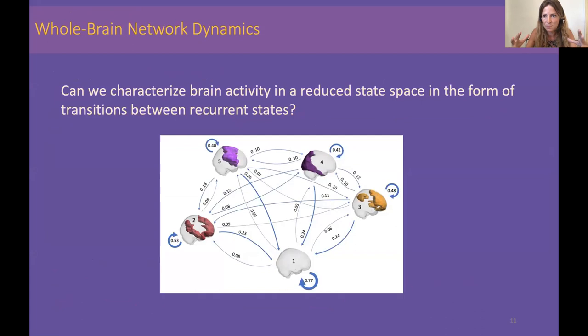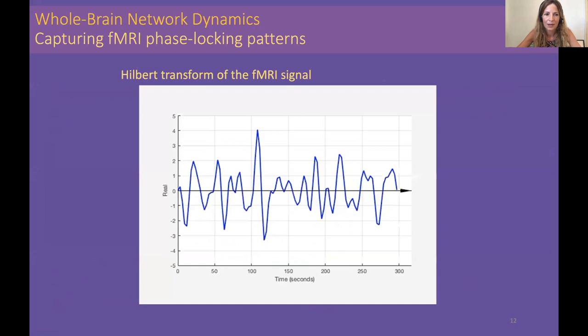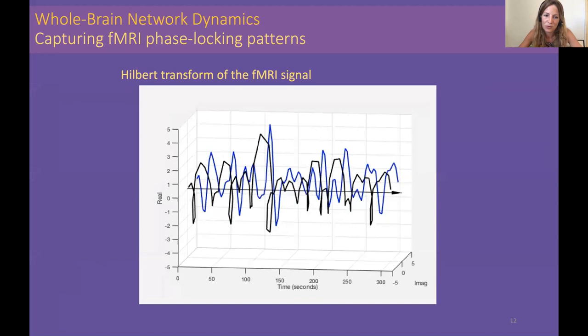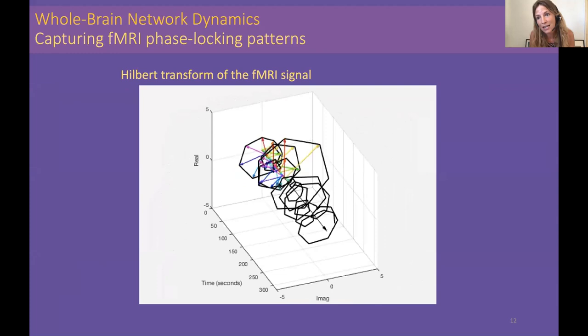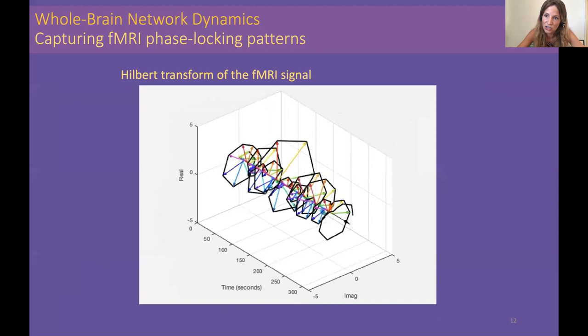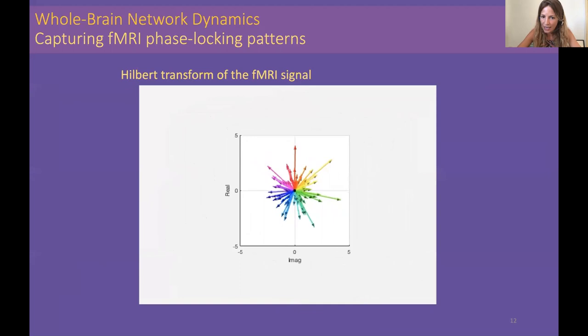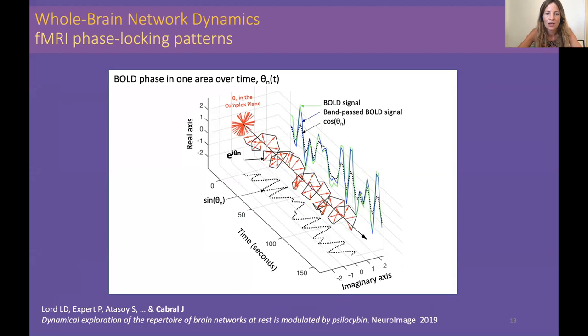The idea is whether we can characterize brain activity in a reduced state space, in the form of transitions between recurrent states. One of the key things we do is, when we have the fMRI signal — a real signal — we cannot directly analyze phase dynamics. To analyze the phase, we use the Hilbert transform. Imagine the signal in the real domain with the imaginary axis; the signal is seen like an oscillation which has an instantaneous phase at each instant of time. If we take the signal in each brain area and compute the phase at each instant of time, we can transform the BOLD signal into an analytic signal over time.